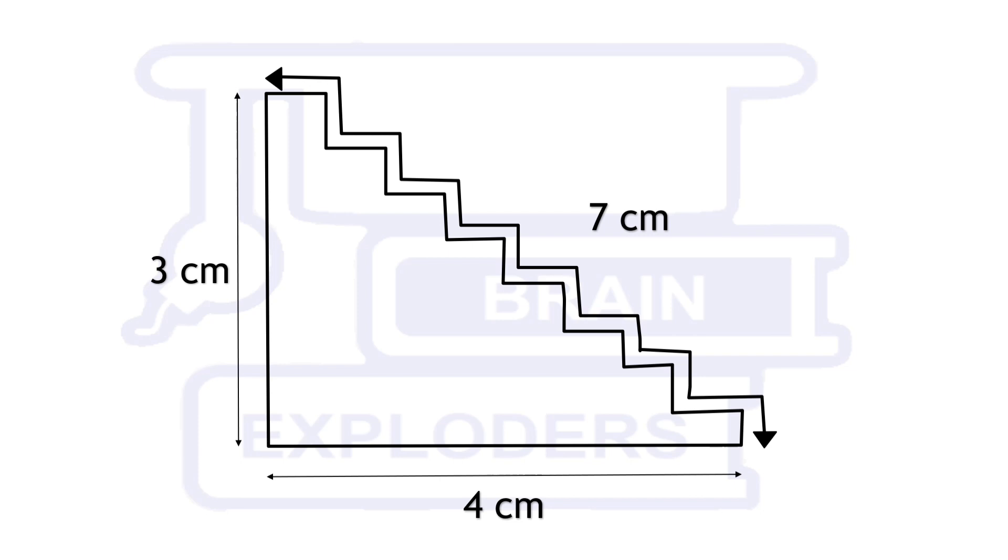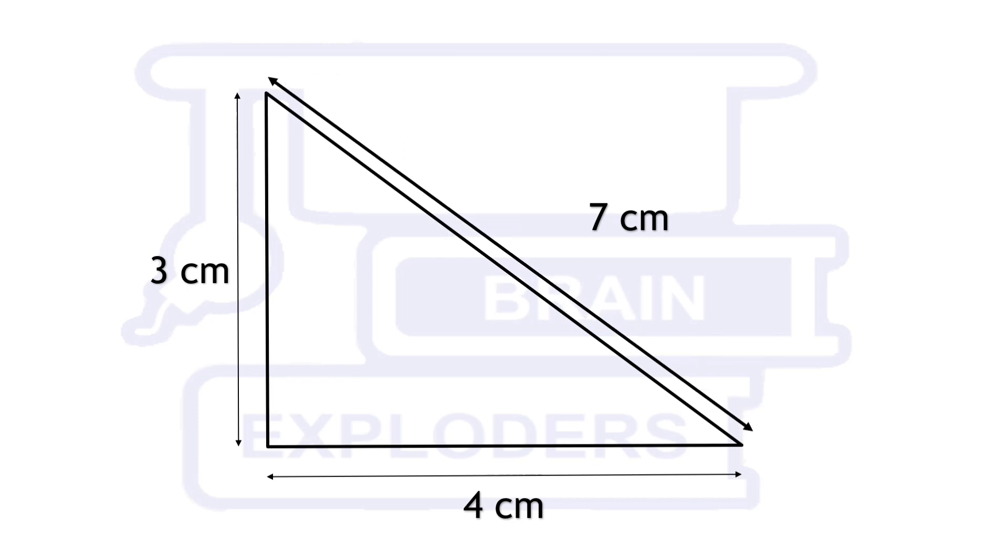If you make this staircase in infinite number of steps and the height is 3 cm and the base is 4 cm, even then the length of the staircase will be 7 cm. Hence this diagonal here has a length of 7 cm.